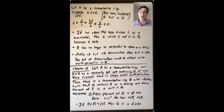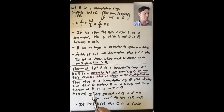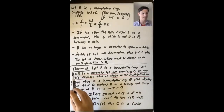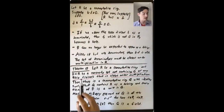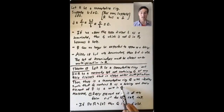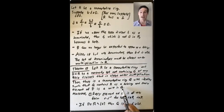Then there is a commutative ring Q with identity such that Q contains R as a subring — meaning Q contains a subring isomorphic to R, just like the rational numbers Q containing Z as a subring really means Q contains a subring isomorphic to Z. D is a subset of R, and every element of D, which may not be a unit in R, becomes a unit in Q.